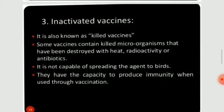Next is inactivated vaccines, also known as killed vaccines. Some vaccines contain killed microorganisms that have been destroyed with heat, radioactivity, or antibiotics. They are not capable of spreading the agent and they have the capacity to produce immunity when used through vaccination.